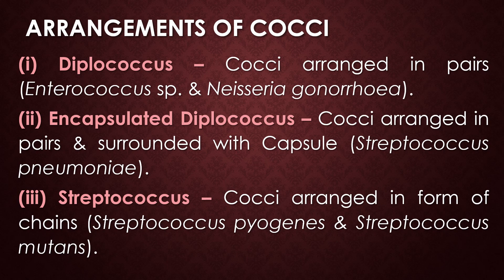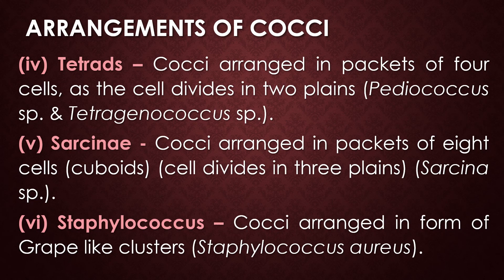The third arrangement is streptococcus — cocci arranged in the form of chains. Examples include Streptococcus pyogenes and Streptococcus mutans. The fourth type of coccal arrangement is tetrad — cocci arranged in packets of four cells, with cells dividing in two planes. Examples of tetrad are Pediococcus species and Tetragenococcus species.